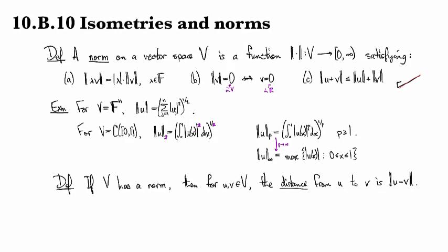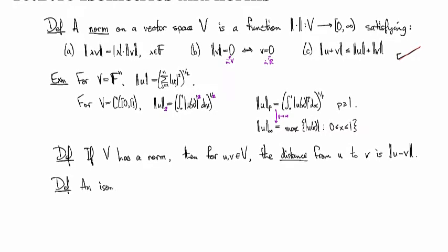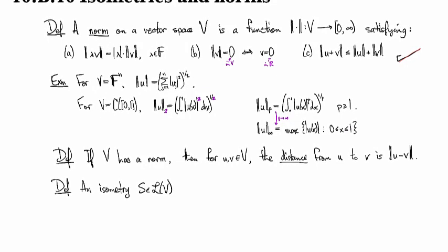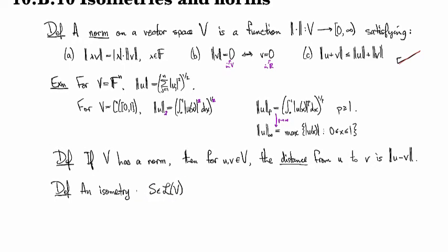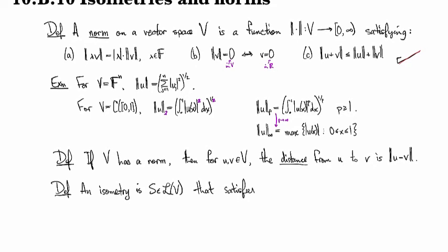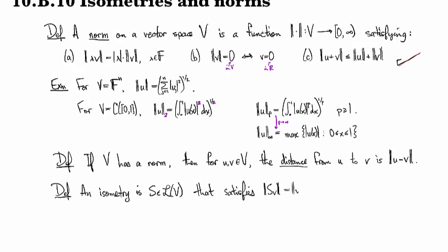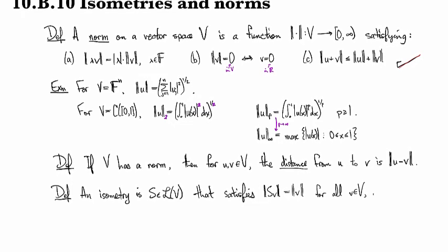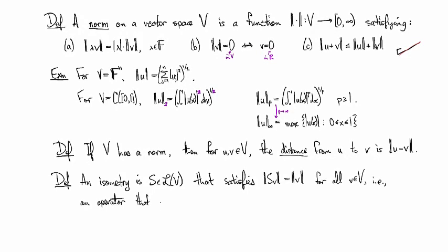And then we say that an isometry is an operator S that satisfies that preserves distances. It satisfies the size of v after applying the transform is the same as the size of v before applying the transform.